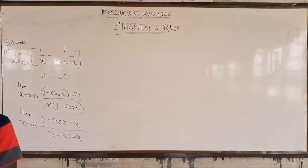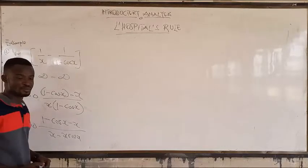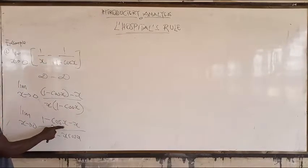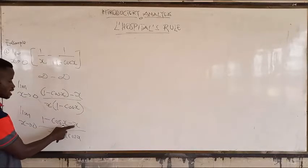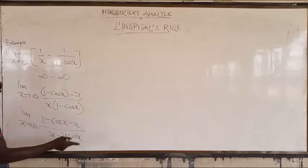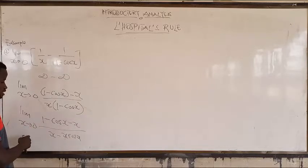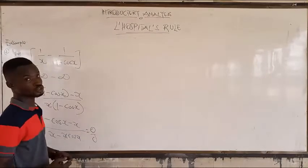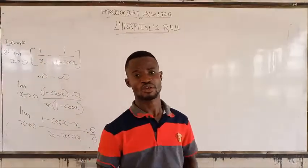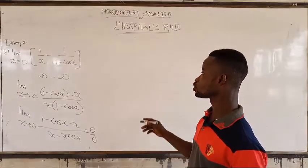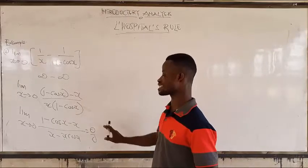Now let's see if we are on the indeterminate form. Zero here — you are going to get it to be 1. Zero here — you are going to get it to be 0. So here, 1 minus 0 — everything on the numerator is 0. In the same way, the denominator is 0. So we get 0 over 0. With our simple knowledge in algebra, we have changed this question to indeterminate form, so we can now use L'Hôpital's rule.